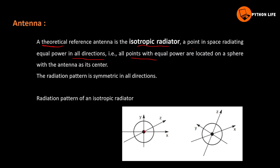This is the center of the diagram, the center of the antenna. This is the sphere shape — the circle radiating, the radiator and the diameter of the signal. The radiation pattern is symmetric in all directions — the same in all directions.